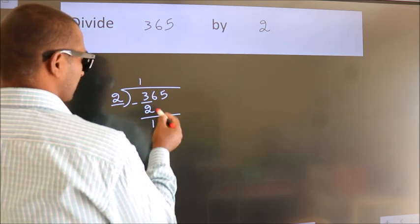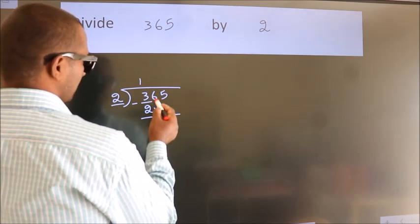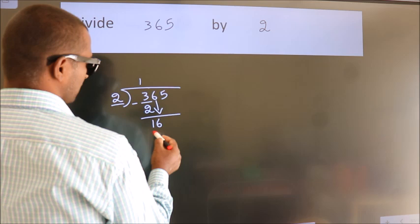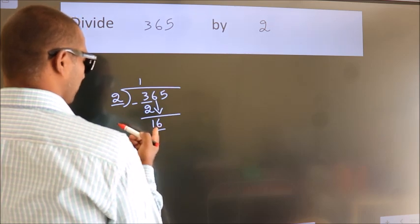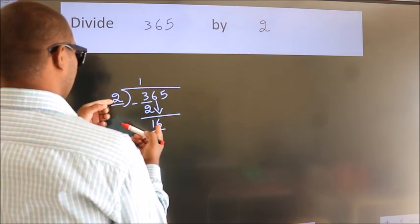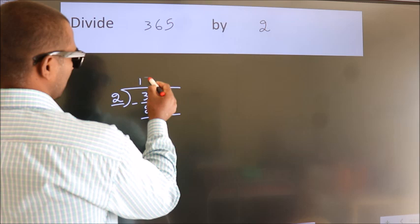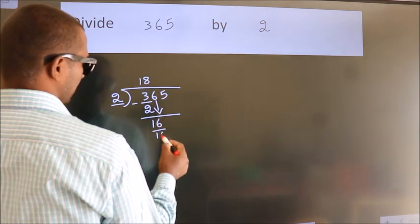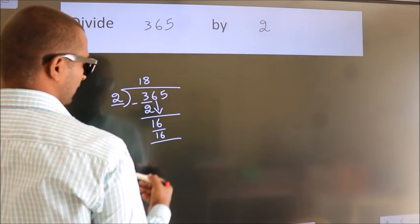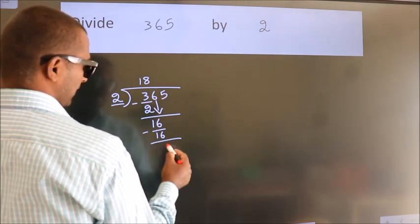After this, bring down the beside number. So 6 down. 16. When do we get 16 in 2 table? 2 8s 16. Now we subtract. We get 0.